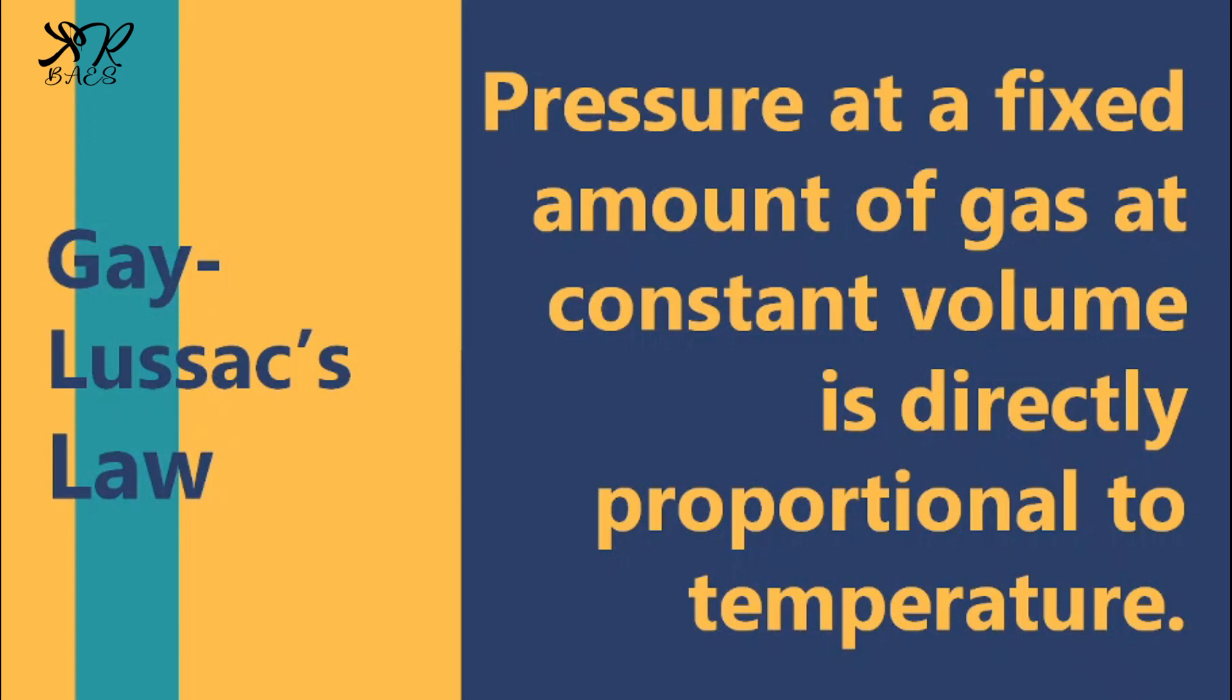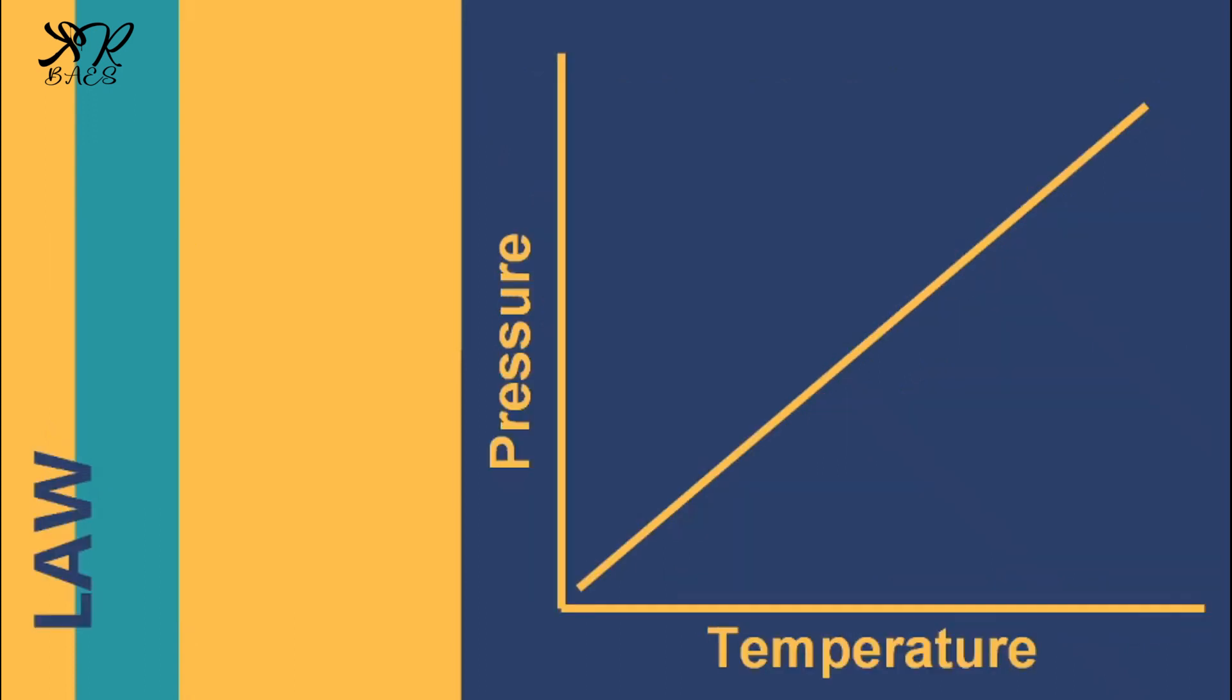Which states that the pressure of a fixed amount of a gas is directly proportional to the absolute temperature. For a gas, temperature and pressure are directly proportional when you keep everything else constant. As the temperature of a gas goes up, its pressure goes up. As the temperature of a gas goes down, its pressure goes down.